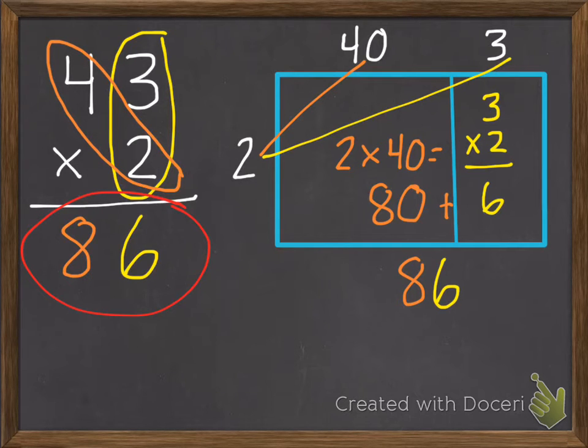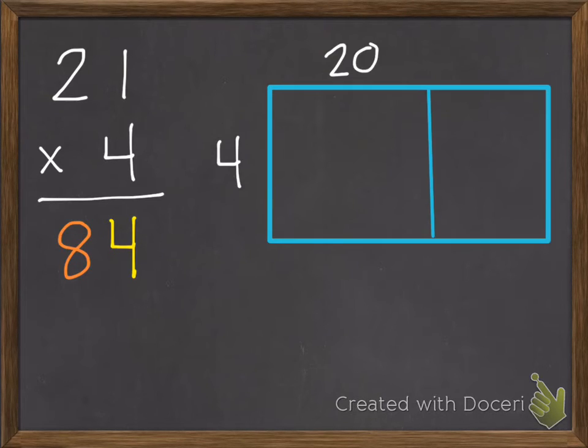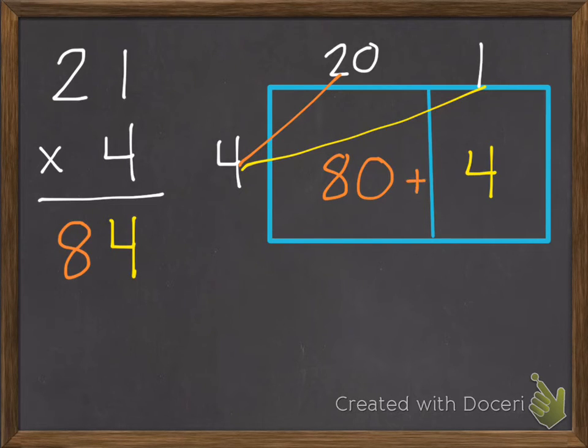Let me do one more example. 21 times 4. Multiply 4 times 1 is 4. Multiply 4 times 2 tens is 8 tens. I can check my work with an area model. 4 times 1 is 4. 4 times 20 is 80. 80 plus 4 equals 84. So I know I'm right. Checked my work.